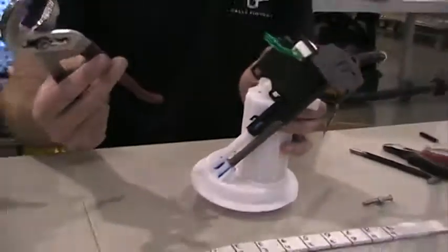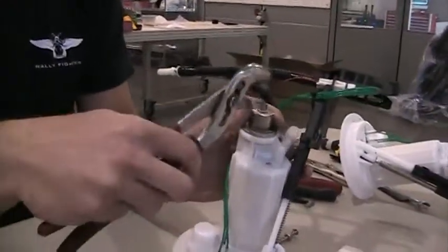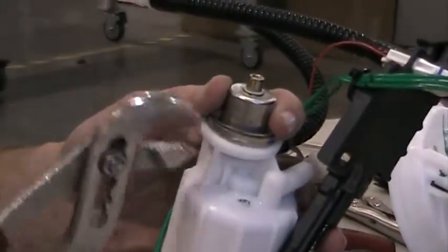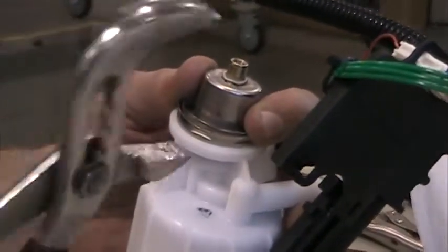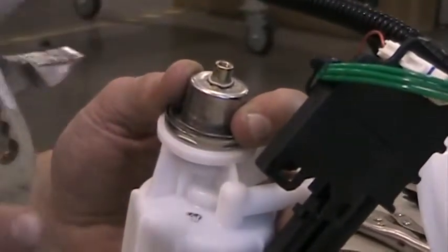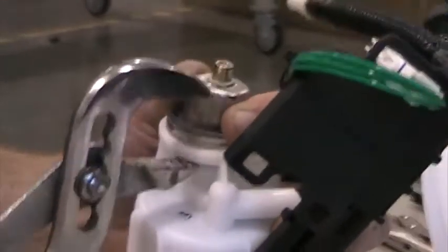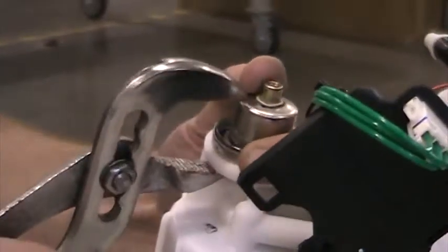Then you want to take a set of channel locks, and the goal here is you're snapping that cap back down past the dimples. So you want to set the channel locks such that you can get it actually over the top of the cap and get a grip on the lip just below it.